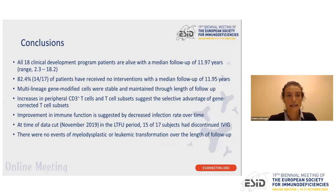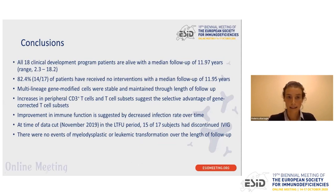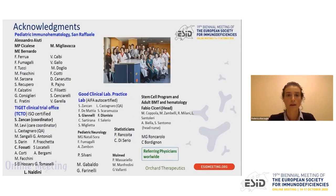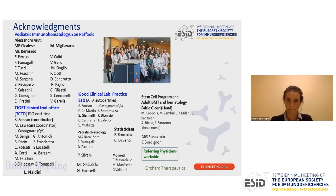In conclusion, all 18 patients are alive with a median follow-up of 11.9 years. Intervention-free survival is 82.4%. Multilineage modified cells are observed in the peripheral blood. There is an increase of peripheral CD34 positive T cells suggestive of the advantage of the corrected T cell subset. We observed improvement of immune function above T cell proliferation and specific immunoglobulin production, and patients gained independence from immunoglobulin replacement therapy. No events of myelodysplasia or leukemia have been observed up to now. I would like to thank all the people who collaborated on the development of this program, and the physicians and patients who entered the study.